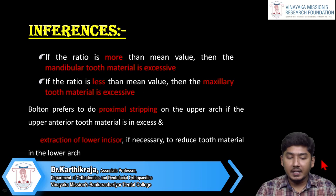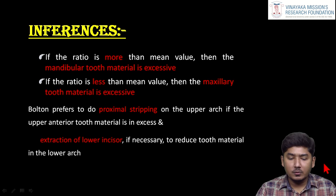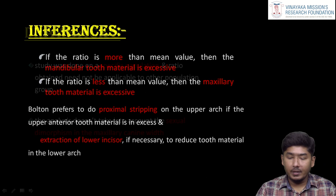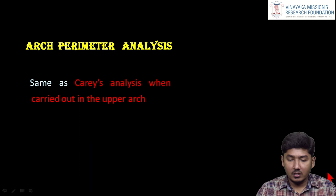The inference is: the overall ratio norm is 91.3 and the anterior ratio norm is 77.2. If the overall ratio is more than 91.3, it indicates mandibular overall tooth material excess. Similarly, if the anterior ratio is more than 77.2, it indicates anterior mandibular excess. Based on this, we can decide on proximal stripping or extraction of lower incisors to normalize the Bolton ratio, as it is mandatorily addressed for the proper completion of overjet and overbite. The general drawback is it pertains to a specific population and there is no sexual dimorphism.